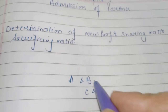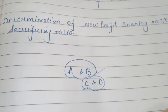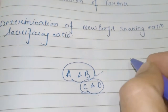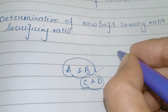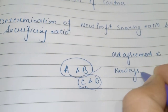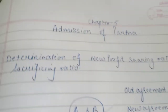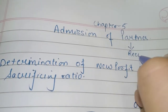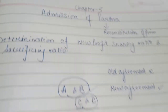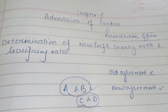Jab bhi partner ki admission hoti hai, ek tarah se aapka jo agreement hota hai wo change hota hai. Earlier jo profit tha wo 2 persons A aur B share karte the. Ab due to admission of C and D, now that profit 4 persons mein distribute hoga. Toh yahan pe jab admission of partner hoti hai, aapka jo old agreement hai wo khatam ho jaata hai aur jo new agreement hai wo existence mein aa jaata hai — firm ka reconstitution hota hai.